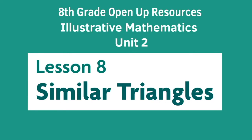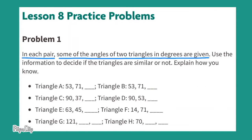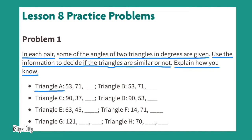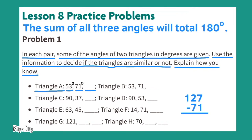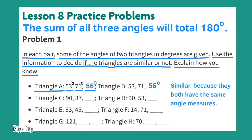8th Grade Open Up Resources Illustrative Mathematics, Unit 2, Lesson 8: Similar Triangles. Problem number 1. In each pair, the angle measures of two triangles are given. Use the information to decide if the triangles are similar. Triangle A has 53 degrees, 71 degrees, and an unknown angle. Since angles sum to 180: 180 minus 53 equals 127, and 127 minus 71 equals 56 degrees. The angles are 53, 71, and 56 degrees. Triangle B has the same angle measures, so these triangles are similar.